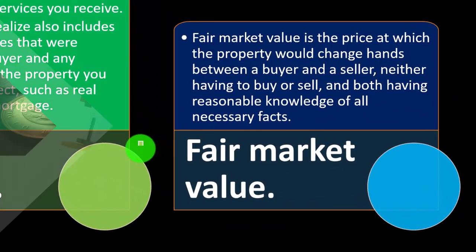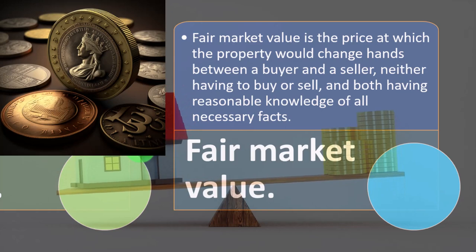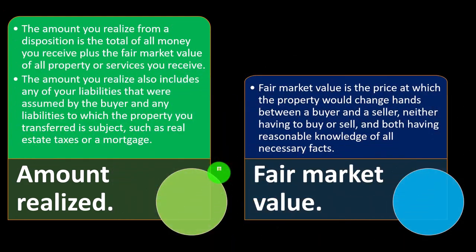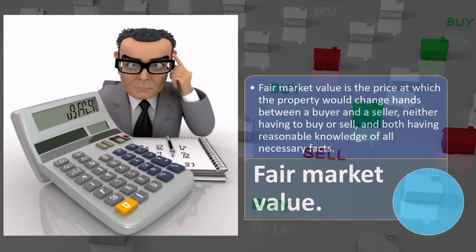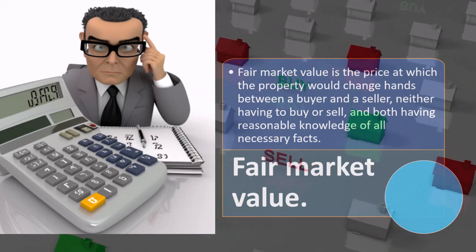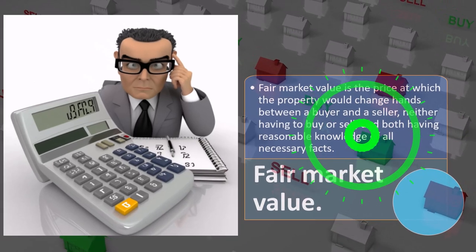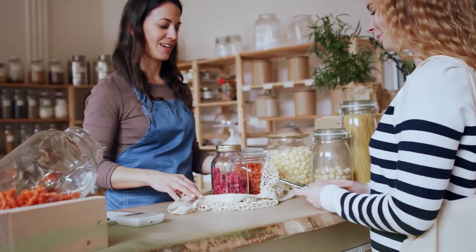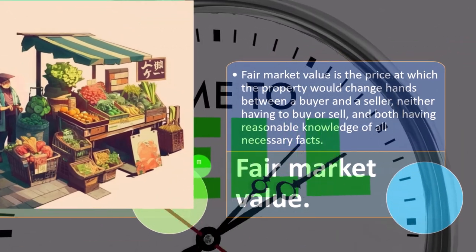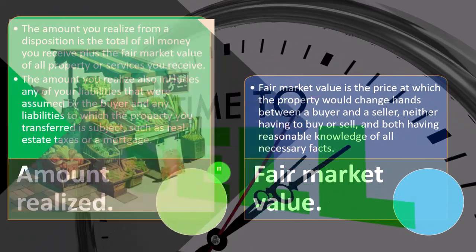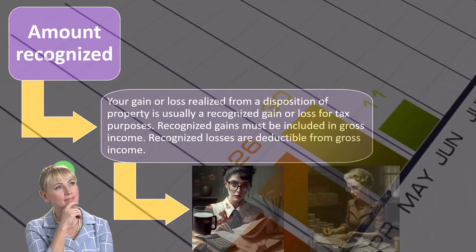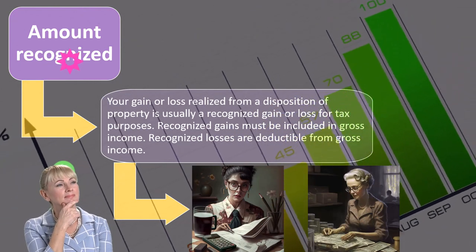Fair market value is the price at which the property would change hands between a buyer and seller, neither having to buy or sell and both having reasonable knowledge of all necessary facts. The problem with figuring out fair market value of property is you don't really know until you actually sell it — especially unique property. In practice, it's difficult because you need an appraisal or something to give you some idea of the fair market value, and any appraisal is simply an estimate.